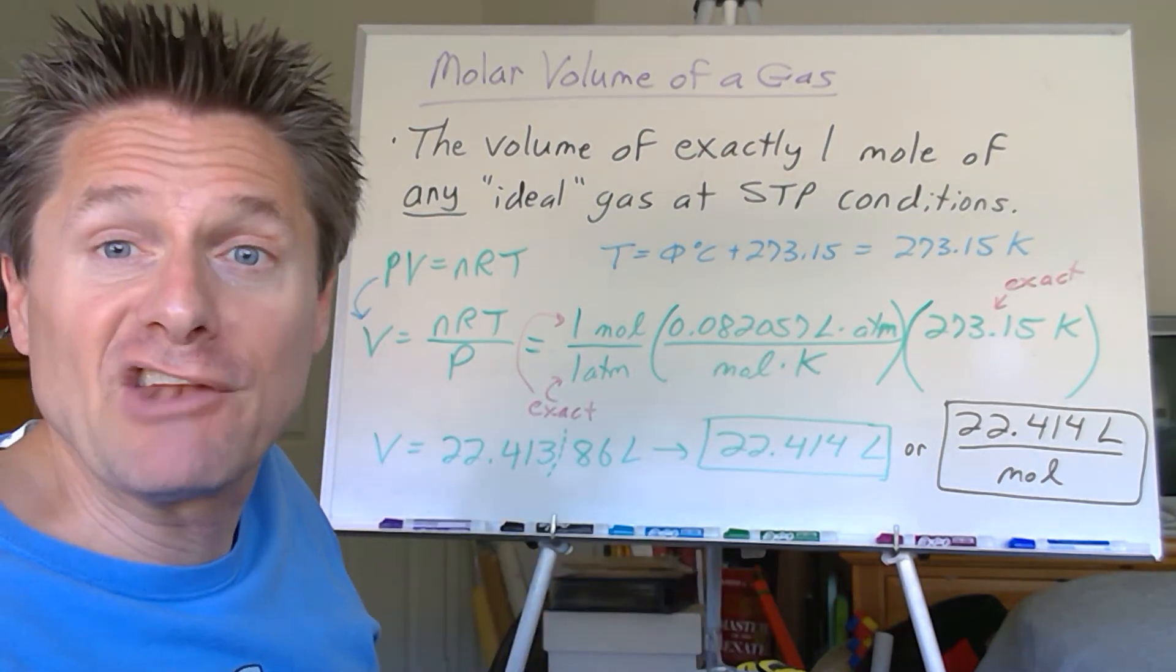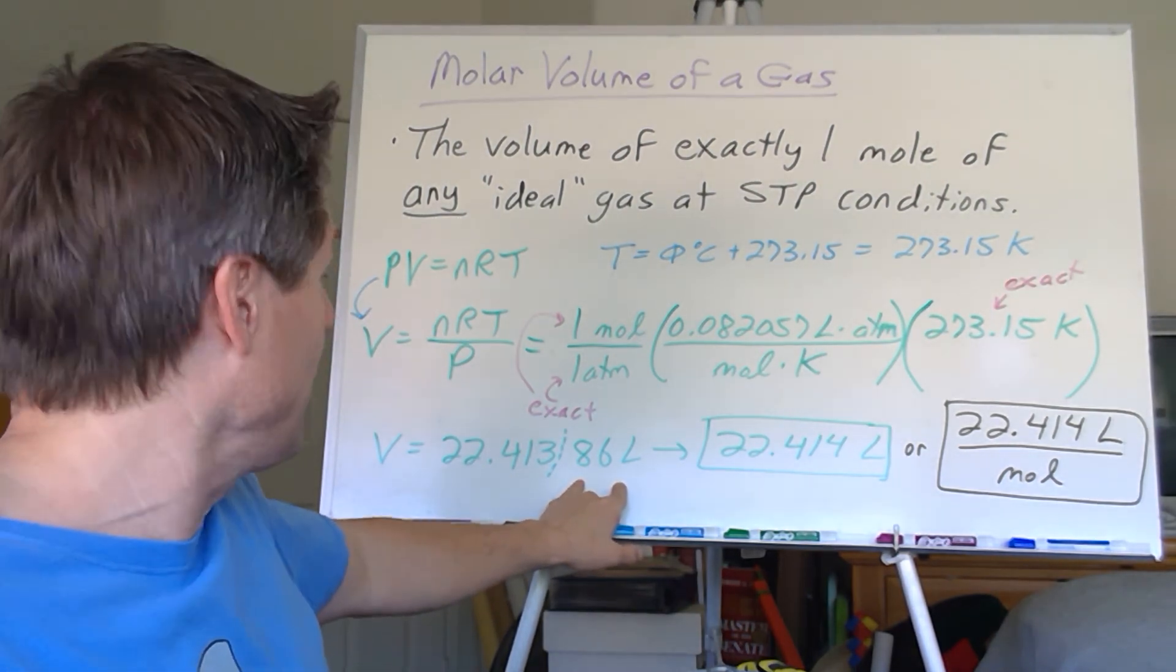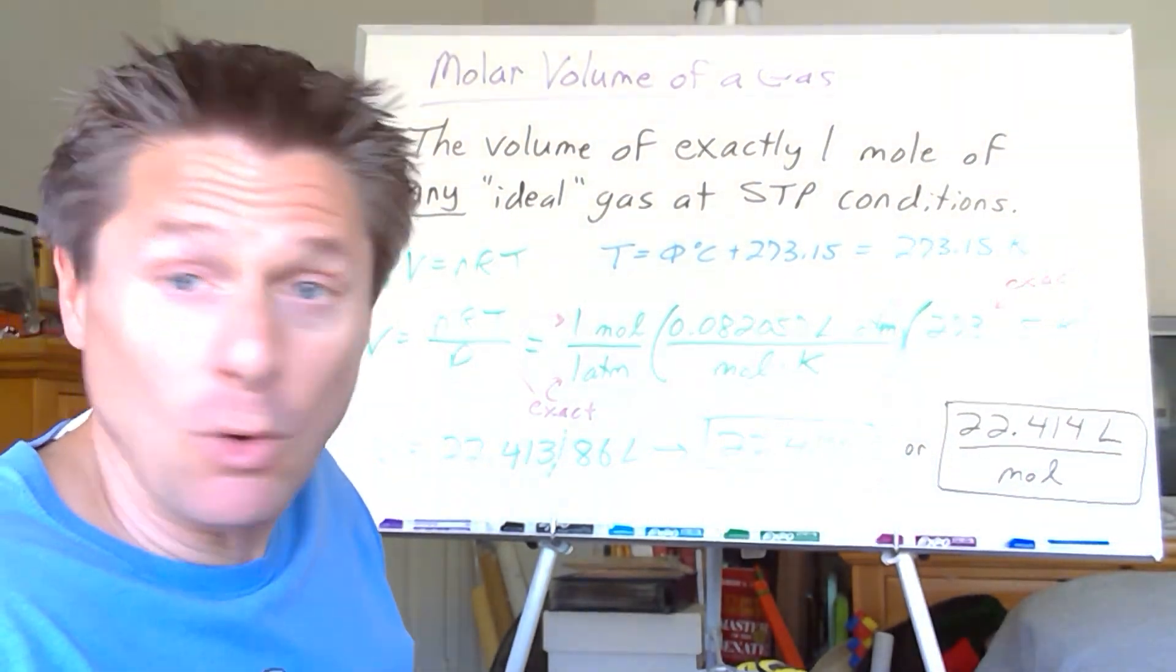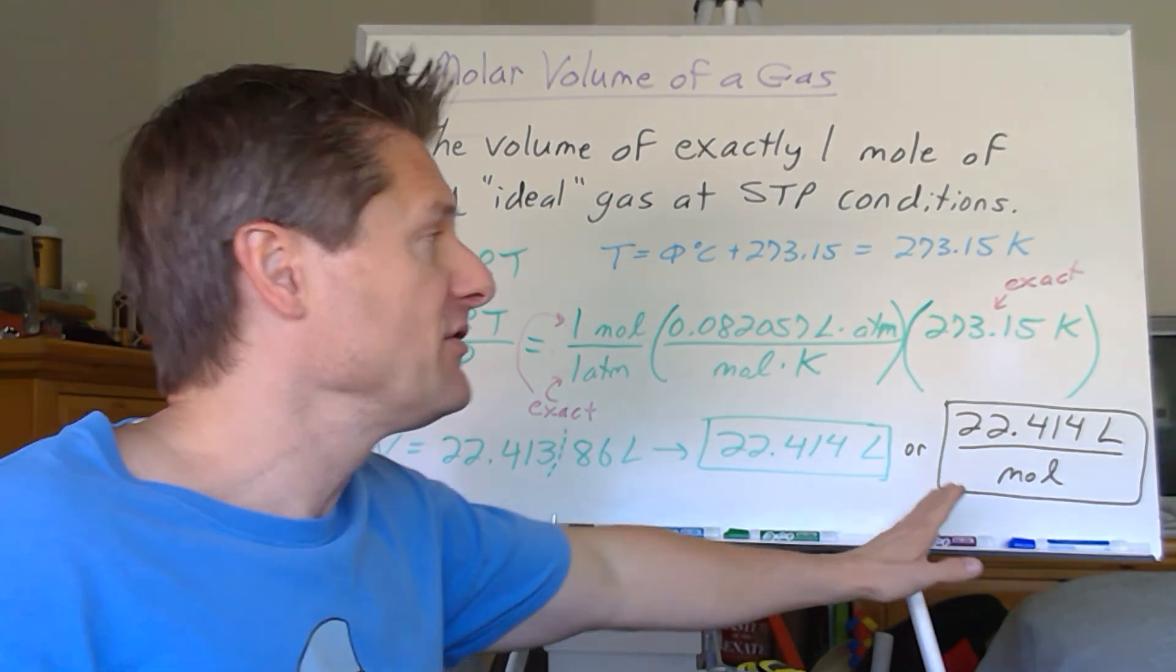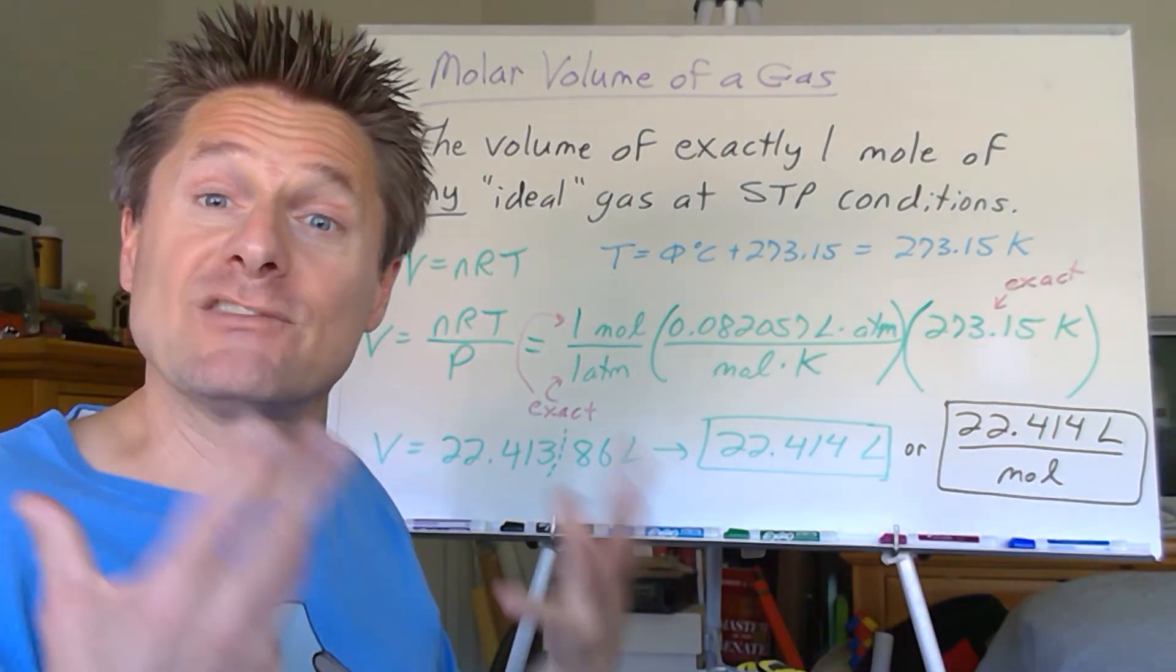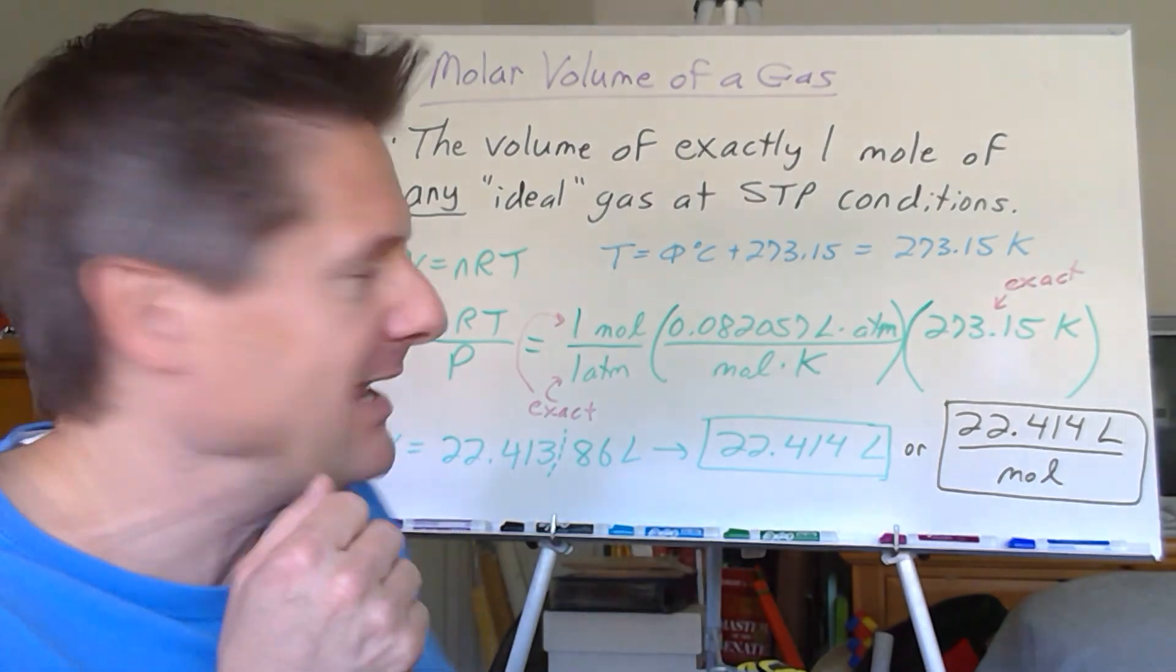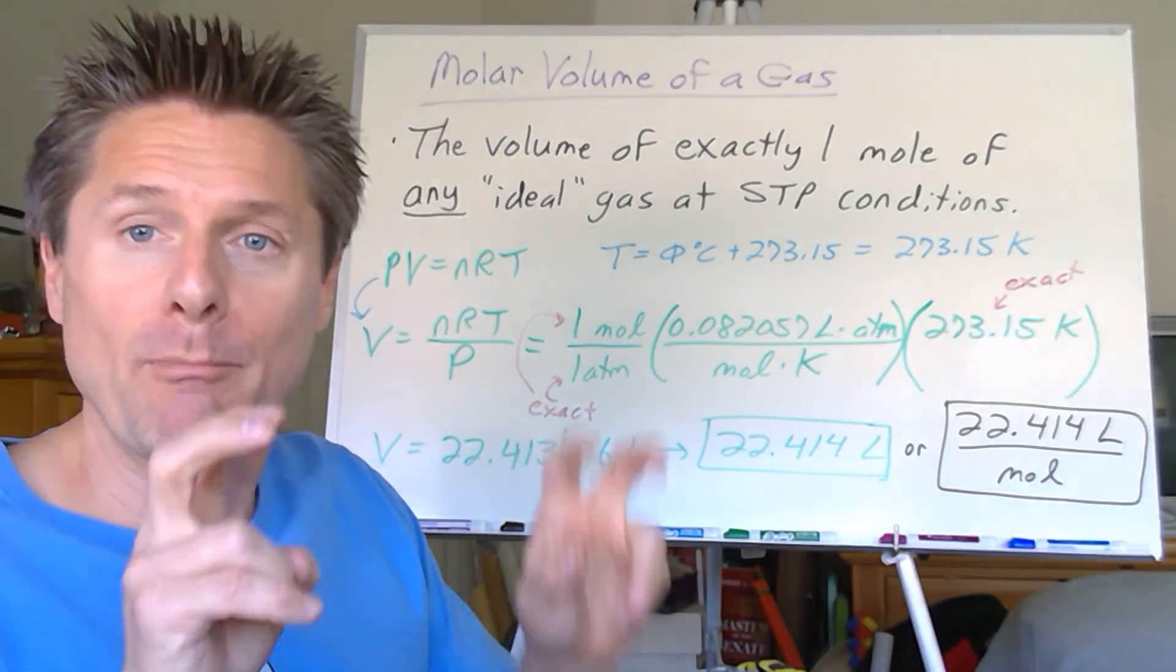So the only thing that's not exact here is R, so we're going to go to five significant figures for that one, so I get 22.41386, good to five significant figures liters, so that rounds to 22.414 liters. That would be the volume of any gas. I don't care what its identity is. So what you commonly see when people say molar volume is they'll say if we have one mole of that gas, it has a volume of 22.414 liters, so it's written as a conversion factor, 22.414 liters per mole.